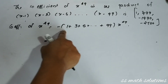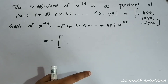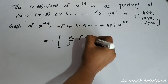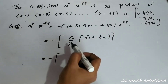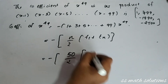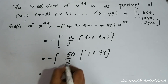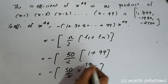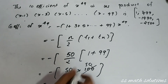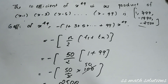The number of odd terms from 1 to 99 is 50. So S = (50/2) × (1 + 99) = 25 × 100 = 2500. Therefore the coefficient of x^49 is −2500. Remember: odd numbers from 1 to 99 have 50 terms, not 99.